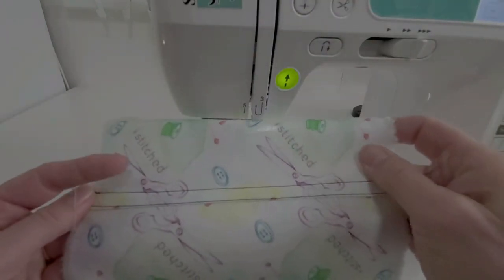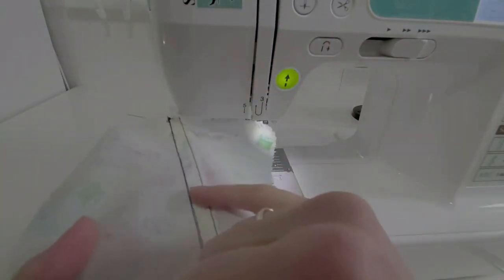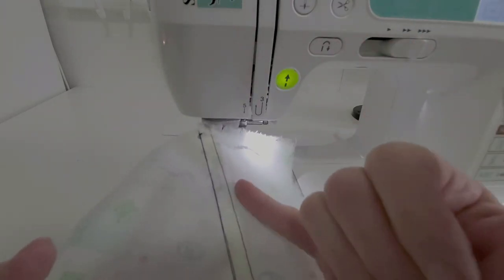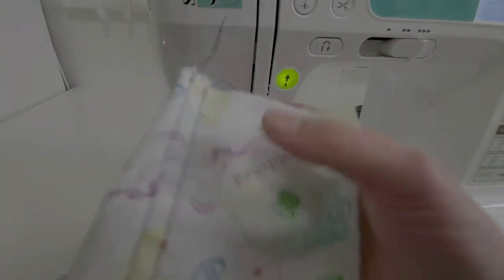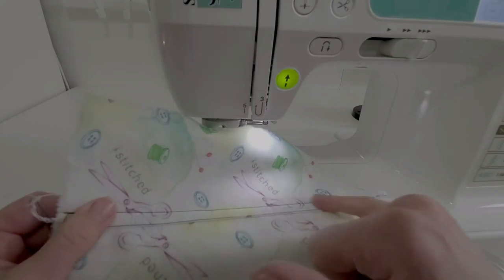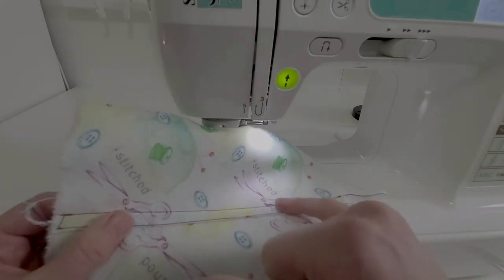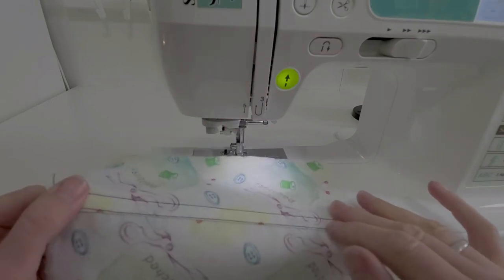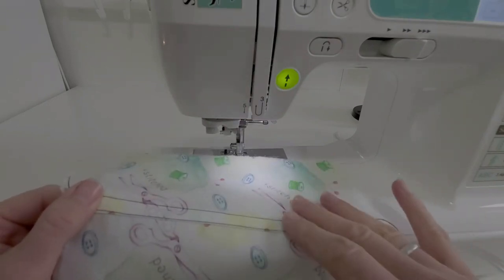There you go. So it looks like a flat felt on the outside but it is a bit quicker because you're not doing the fussy trimming and folding. You're just serging and then doing your double top stitch. So it's basically just a decorative seam treatment. It's not a seam finish because we did have to use the serging, so it is just for a decorative effect to have the look of a flat felt.